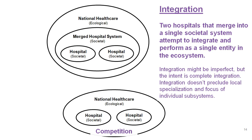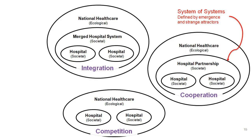Another way hospitals might interact is to merge into a single societal system and try to integrate their functions. The competition bubble becomes an integration model: rather than two hospitals simply existing within the national ecology, we create a new layer — the merged hospital system — which is a societal system. The top diagram depicts two hospitals trying to act as a single merged entity within the ecological system. Integration is an alternative to competition in the ecological space.